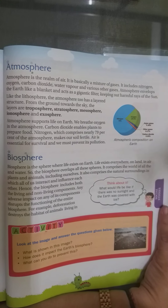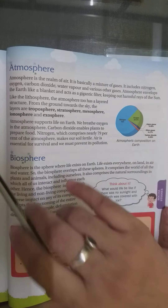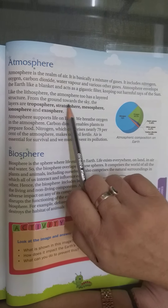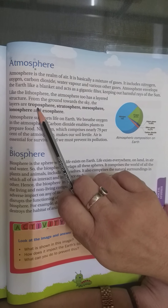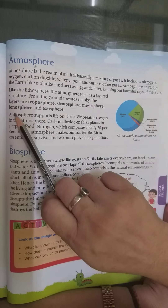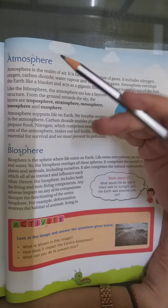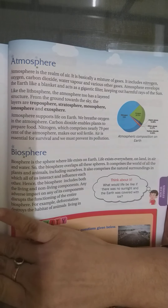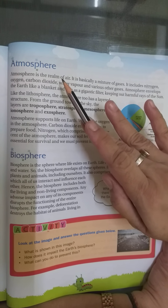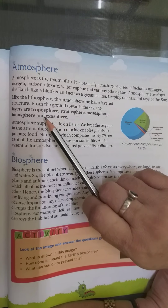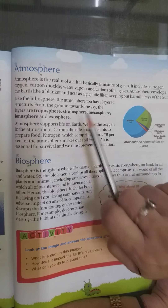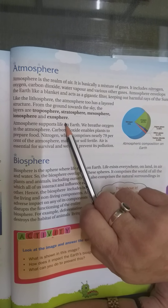Like the lithosphere, the atmosphere too has a layered structure. From the ground towards the sky, the layers are: troposphere, stratosphere, mesosphere, ionosphere, and exosphere. Just as the hydrosphere has different layers, the same way we have layers for the atmosphere.